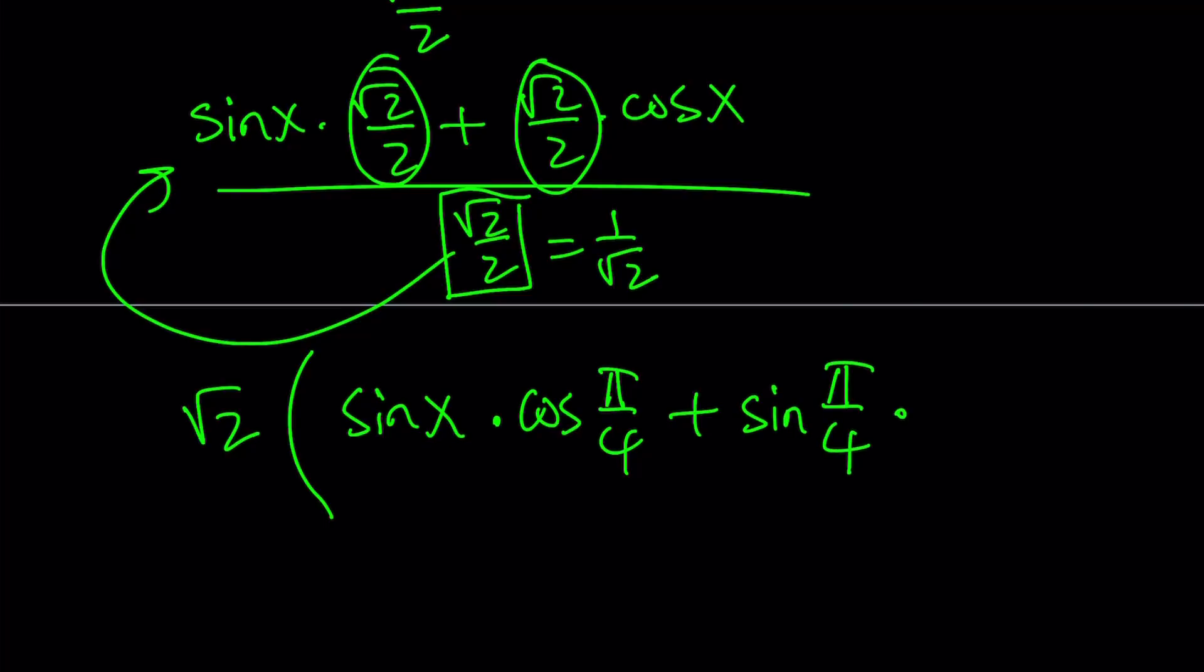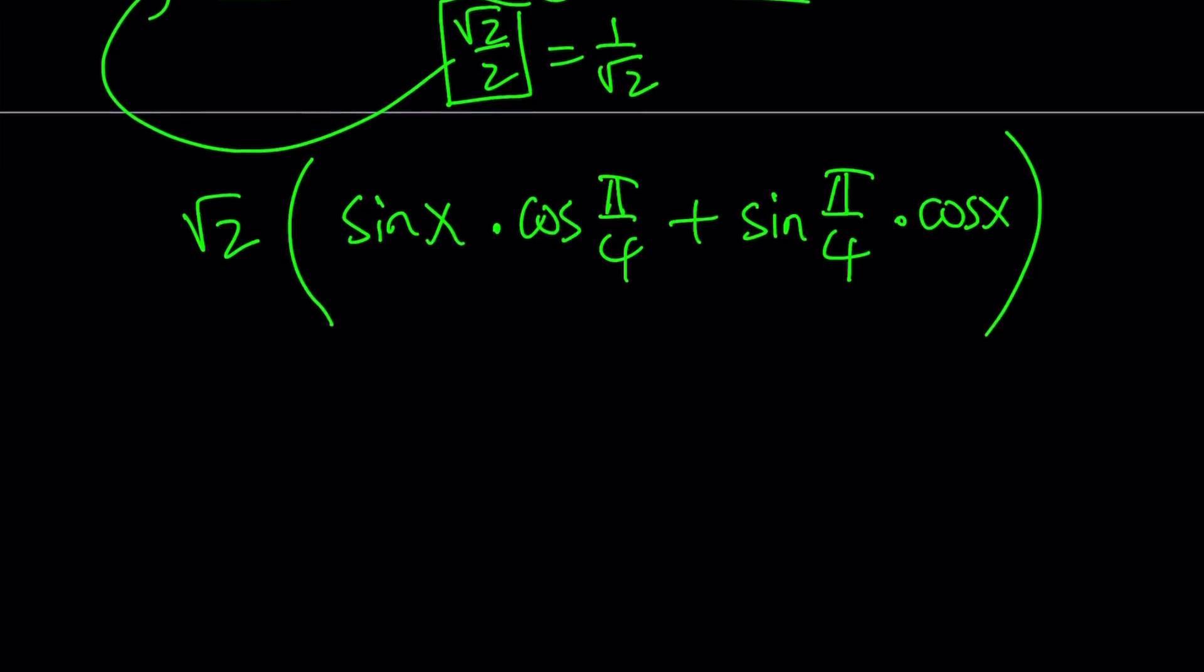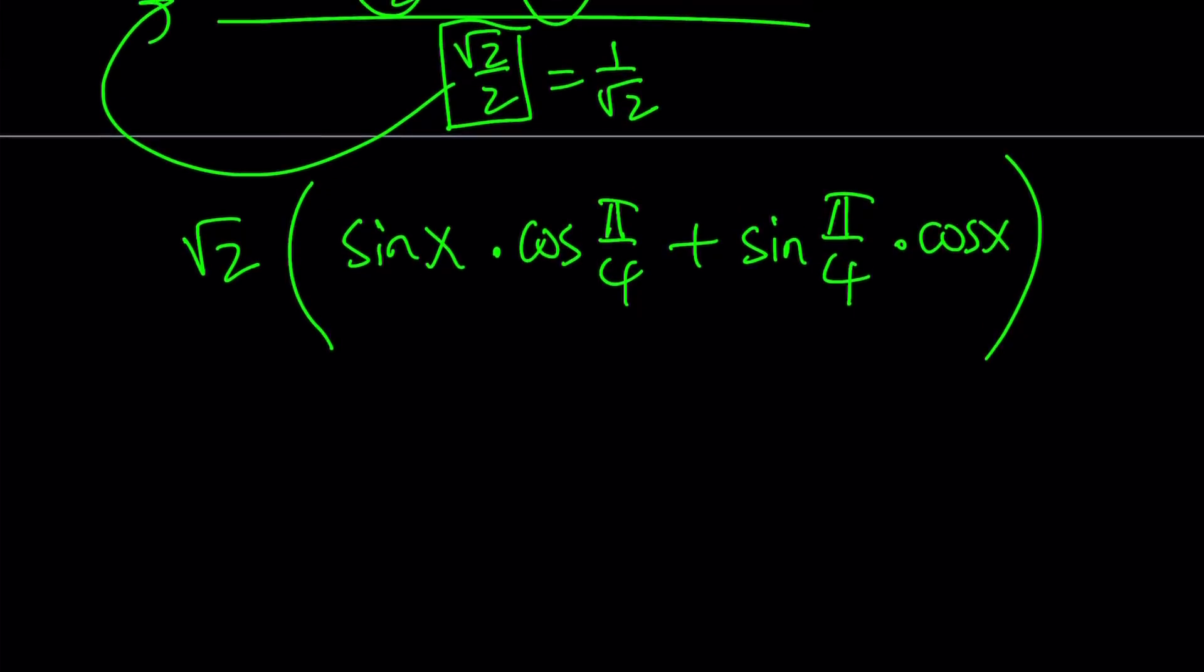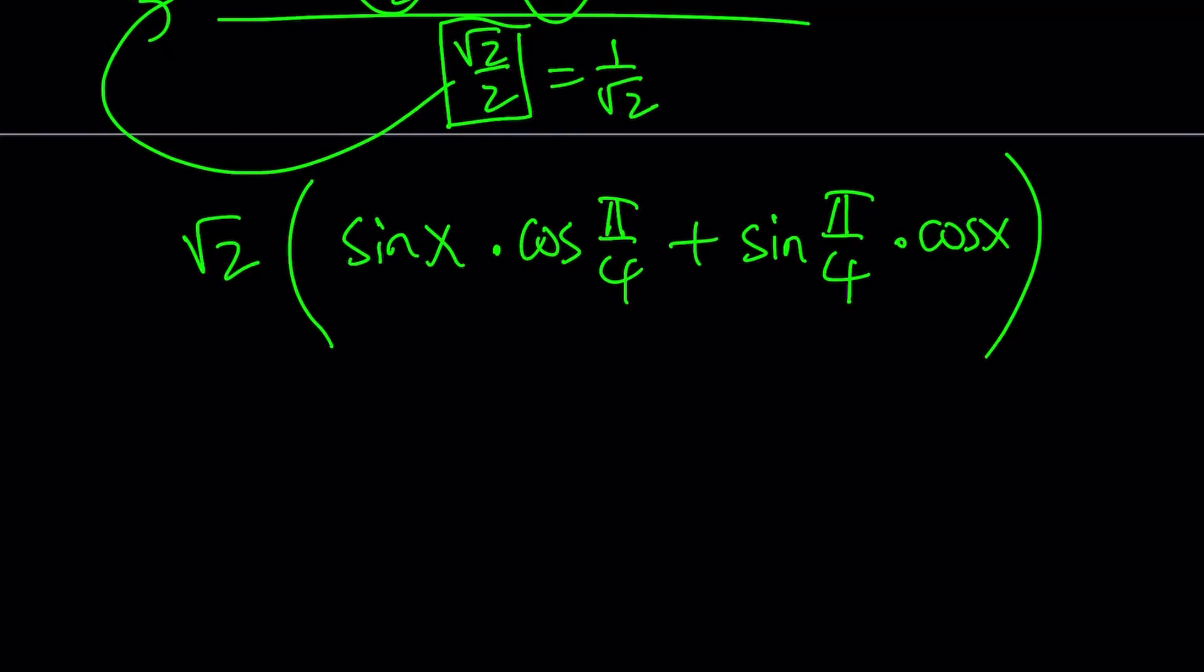So this is our expression that we are trying to maximize and minimize. But notice that the expression inside the parentheses is a well-known formula or some type of structure. It is basically equal to sin(x + π/4). Awesome. This is really neat, right?